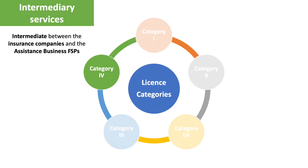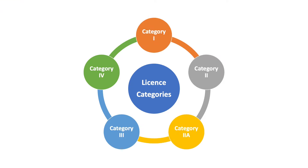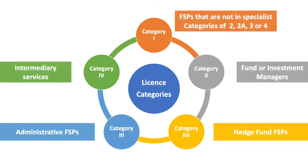Category 4 FSPs always have a binder agreement with the insurance company to perform their intermediary function. Please note that all categories except Category 1 are specialist categories that specialize in the functions they offer. The license categories mentioned also have product subcategories, meaning an FSP that applies for a FACE Act license would also have to apply for a specific product subcategory.